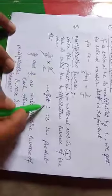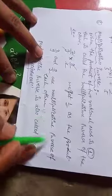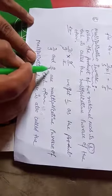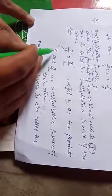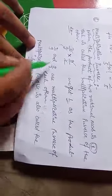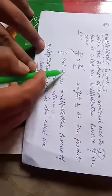2 by 9 and 9 by 2 are multiplicative inverses. What is the multiplicative inverse? 2 by 9 is the multiplicative inverse of 9 by 2. This is the multiplicative inverse of each other. What is the reciprocal? It will be 9 by 2.